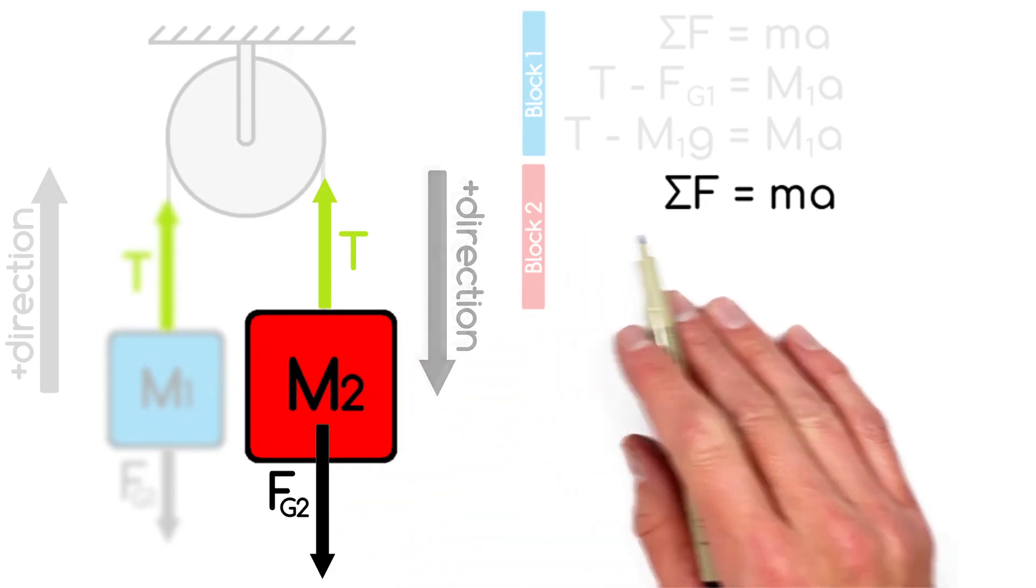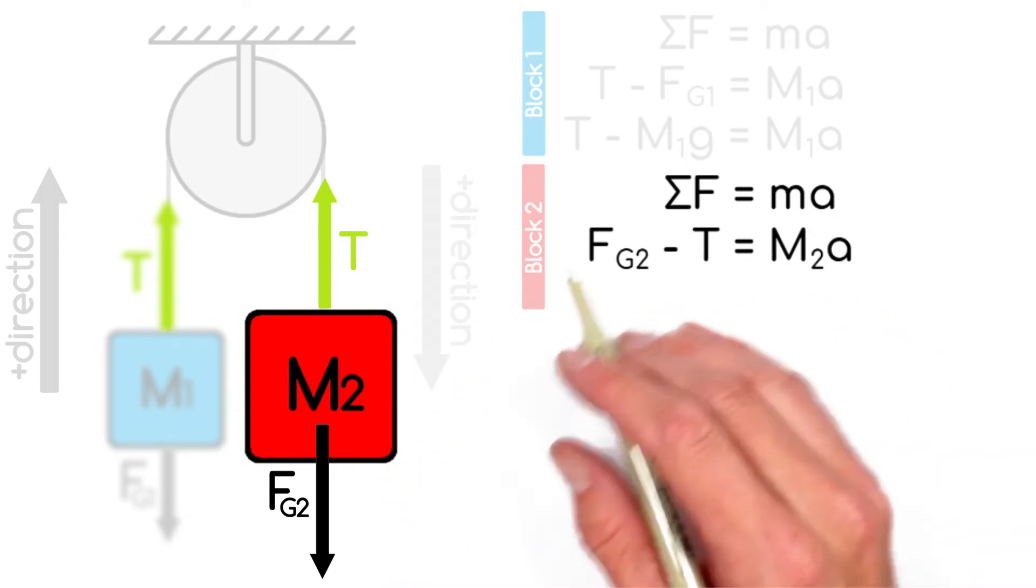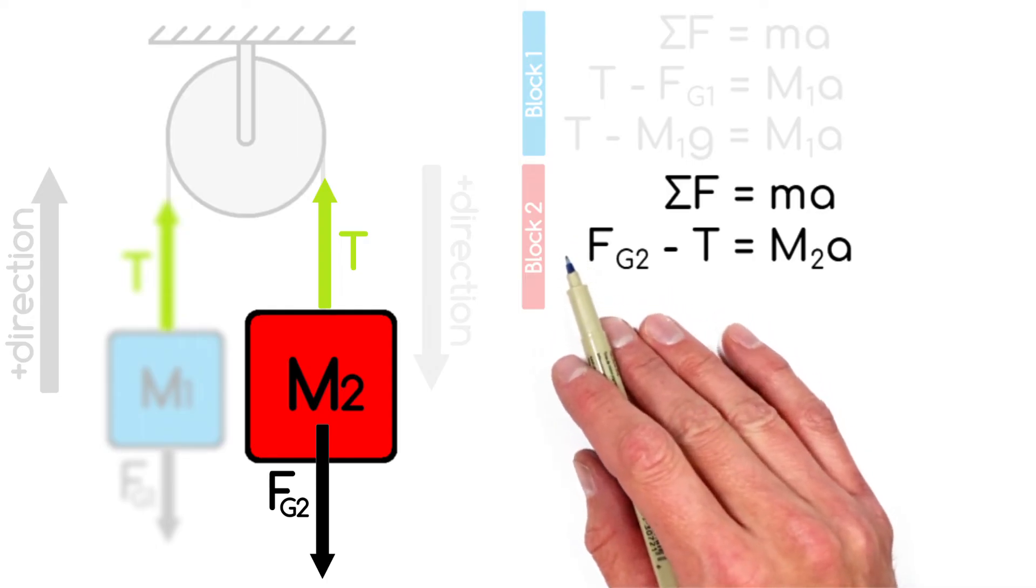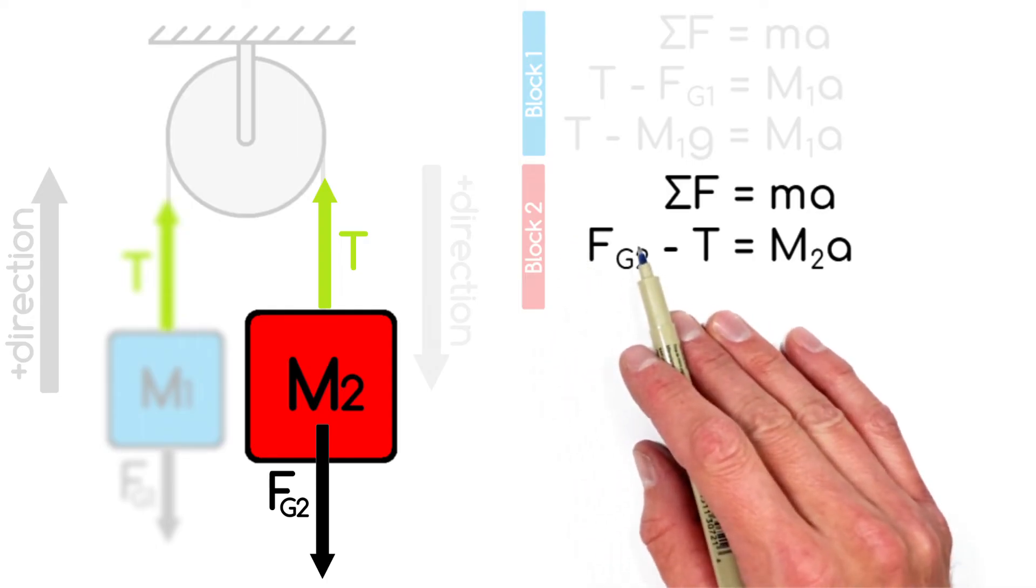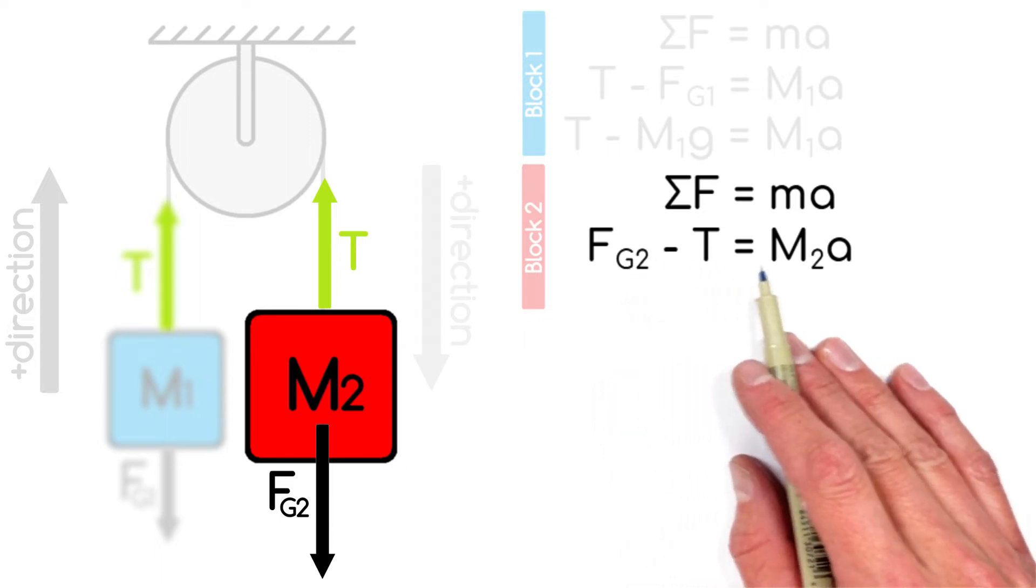And so in looking at the second law, the force down on this block is going to be in the positive direction. That's the force by gravity. And then minus the tension in the string is going to give us the net force on the block. And we're going to set that equal to M2a.